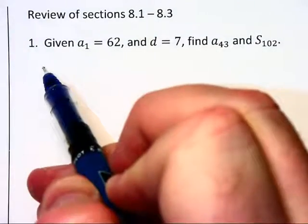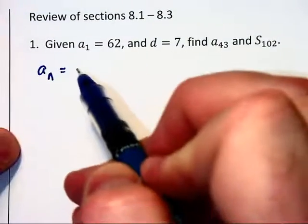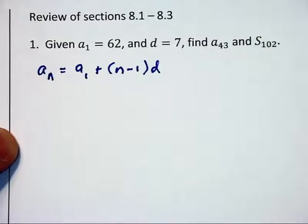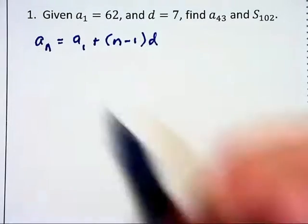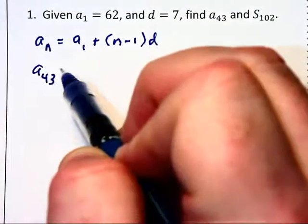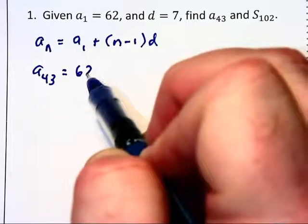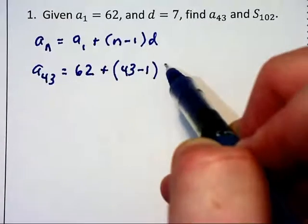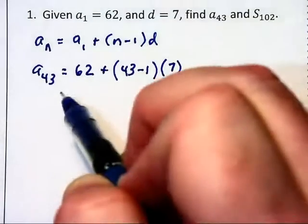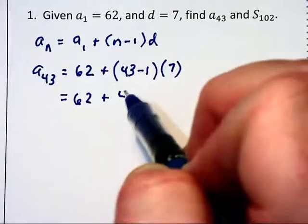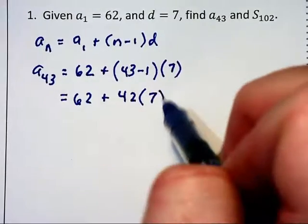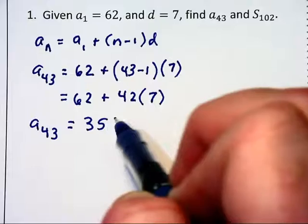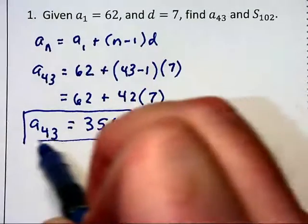I am going to begin with the formula a sub n equals a sub 1 plus n minus 1 times d in order to find a sub 43. The 43rd term is going to equal a1 which is 62 plus n is 43, so 43 minus 1 times d which is 7. This becomes 62 plus 42 times 7 and that tells us that the 43rd term is equal to 356, and that is our first answer.